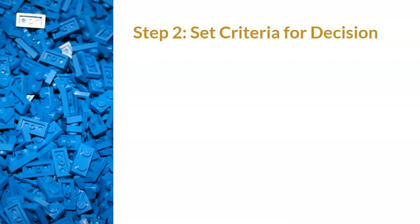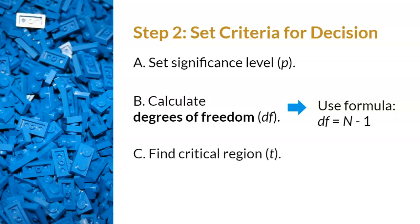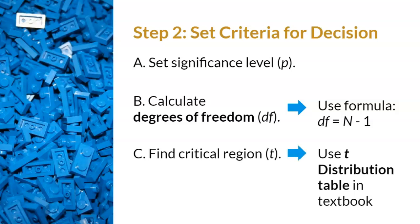Step two, the blue lego, is to set the criteria to make a decision for whether the study worked or not. This step has modifications because we are no longer calculating a z-score. First, we will still set our significance level p, as we did for previous hypothesis tests. Second, we have our first modification: we need to calculate degrees of freedom, which is referred to as df in statistical notation. We will need to use this new formula. Third, we will still need to find the critical region. However, the critical region is now a t instead of a z, so we will be using a new table called the t-distribution table.